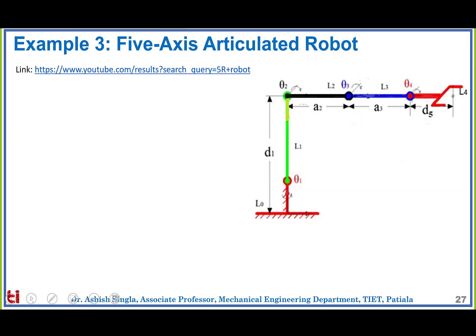Next we have the five-axis articulated robot. A link description video showing its physical movement is provided. For frame assignment, all five rotations are already marked: theta 1 about the torso joint, theta 2 about the shoulder joint, theta 3 about the elbow joint, theta 4 about the wrist joint, and theta 5 as the roll about the wrist axis.